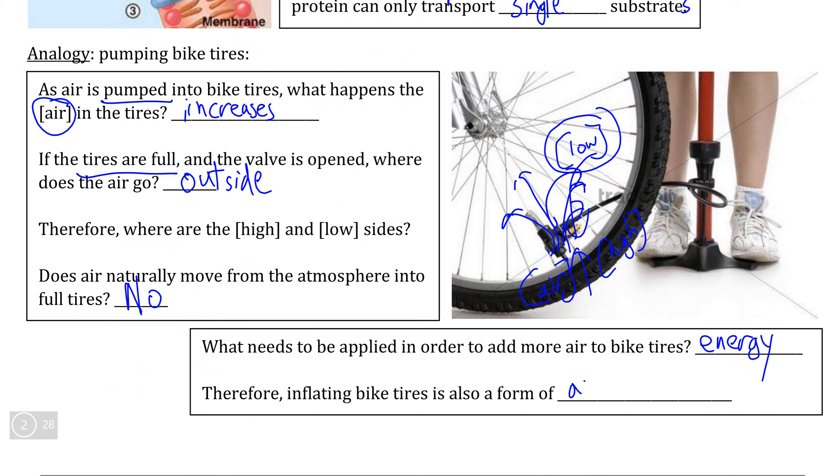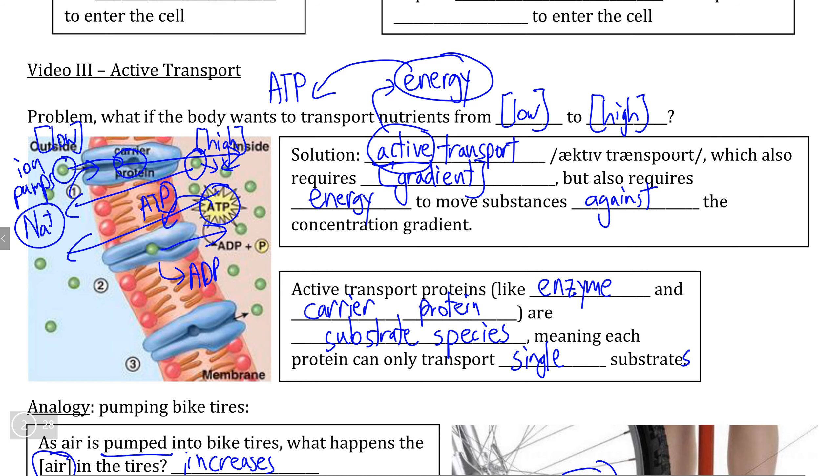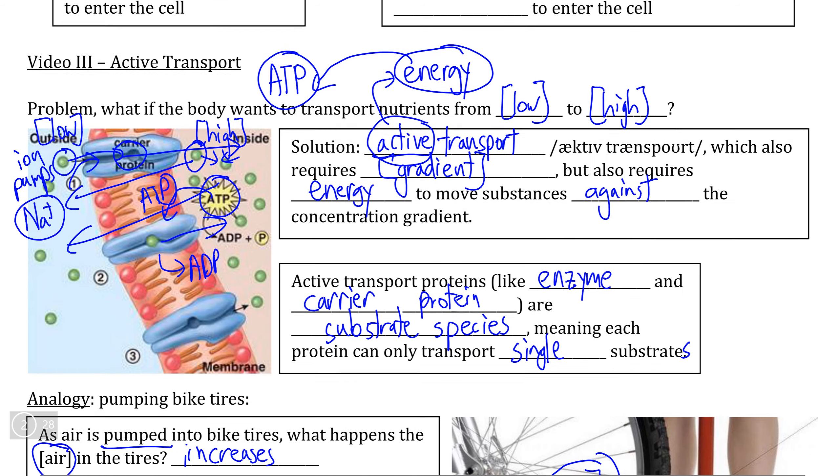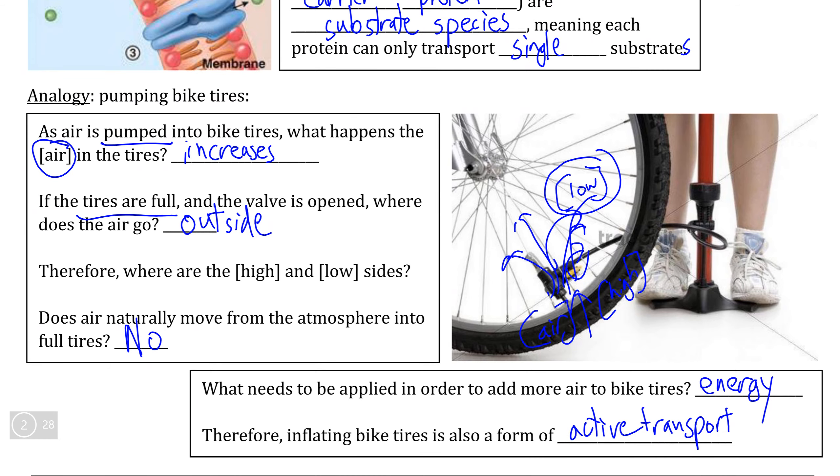For active transport across a cell membrane, the energy source is adenosine triphosphate, but for pumping your tires, the energy source comes from manual power of using an air pump to pump air from a lower concentration in the atmosphere into your bike tires.